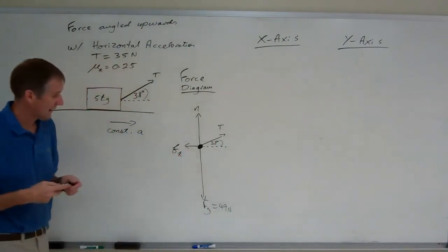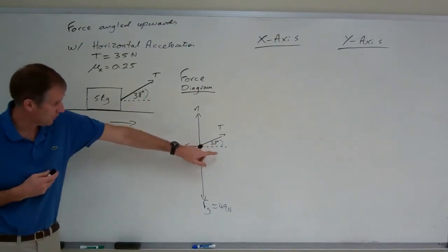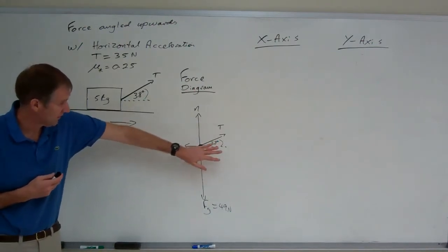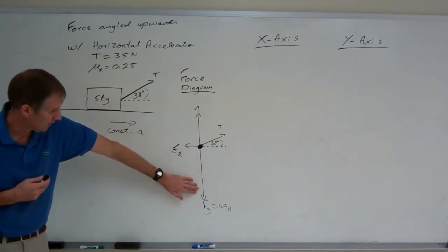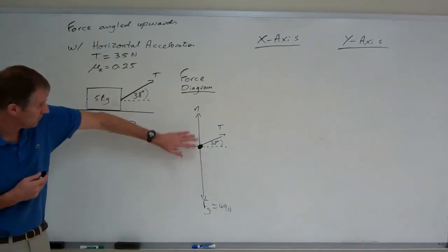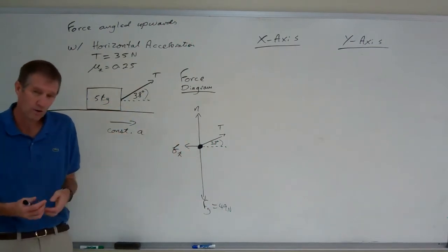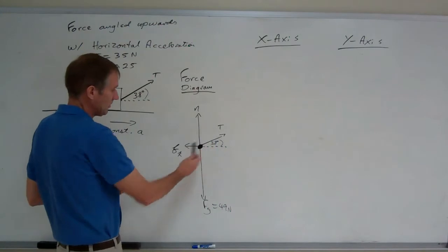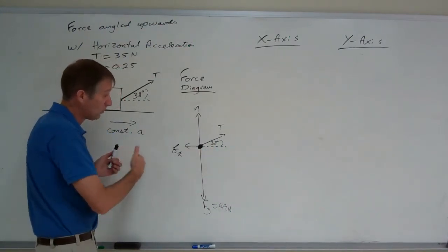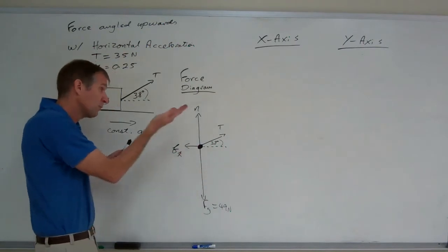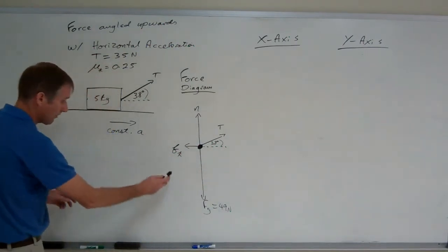That's our force diagram. Now, I need to resolve the vectors, the components of the tension because that's the one that gets the triangle. The weight doesn't get the triangle because it's all in the y-axis. The normal force is all in the y-axis. The friction is all in the x-axis. No triangle necessary. But the tension is both x and y, right? It's pulling to the right x-axis and it's also pulling up y-axis. So we need to resolve that.